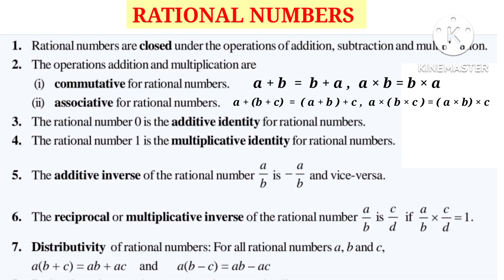0 is the additive identity for Rational Numbers. That means, if we take any rational number A, then A plus 0 is equal to 0 plus A is equal to A.